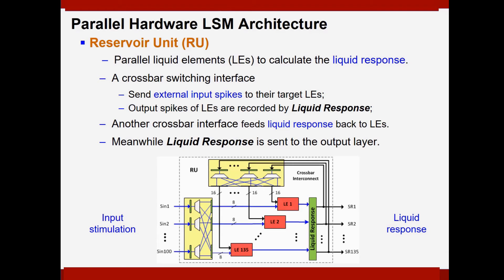In this work, we developed a parallel hardware architecture for liquid-state machine. Let us first start from the implementation of the reservoir. First, we implement multiple parallel liquid elements to calculate the liquid response. Then, a crossbar switching interface is used to send the external input spikes to their target liquid element. At the same time, the output spikes of the liquid element are recorded by a register called the liquid response. And another crossbar interface feeds the liquid response back to the liquid element. Meanwhile, the liquid response is sent to the output layer as stimulation.